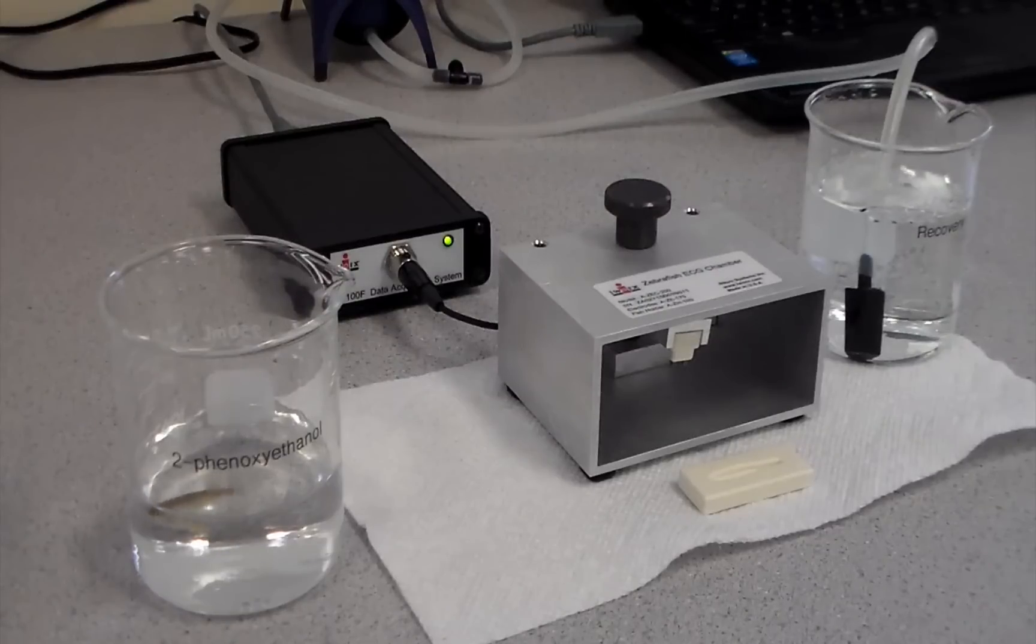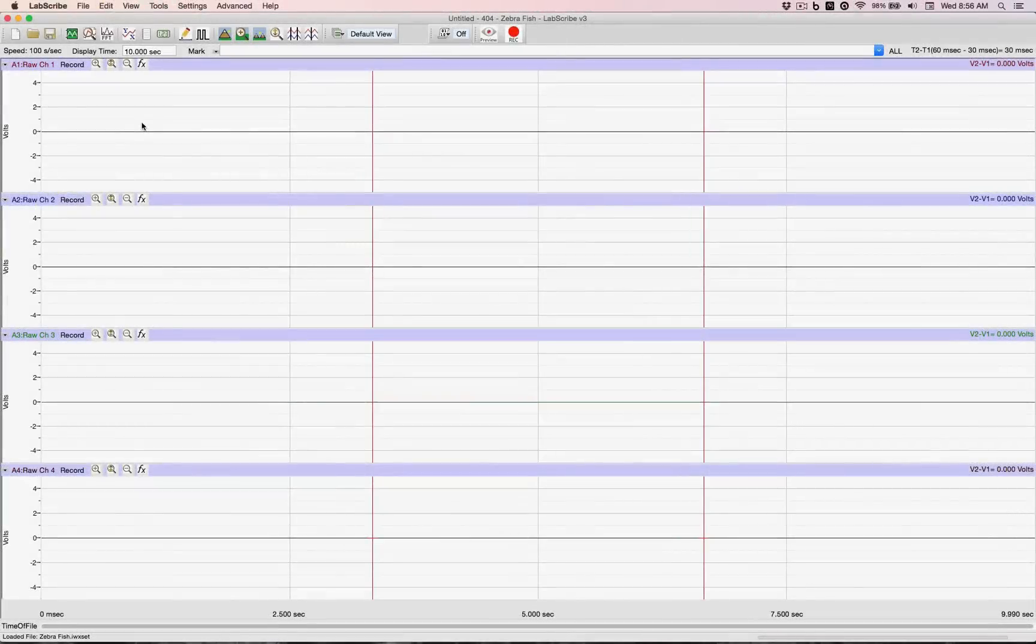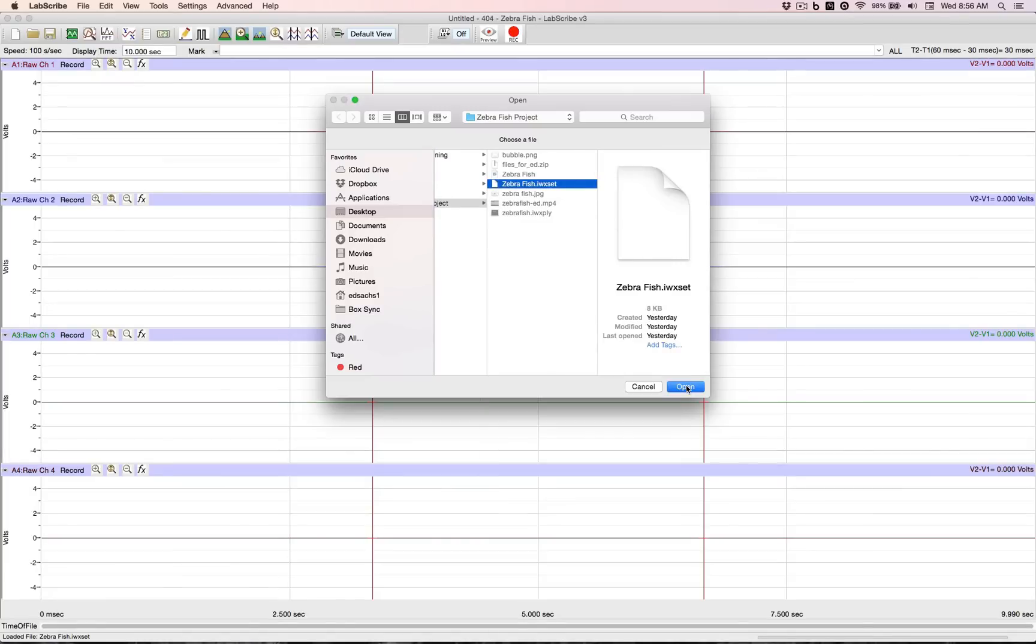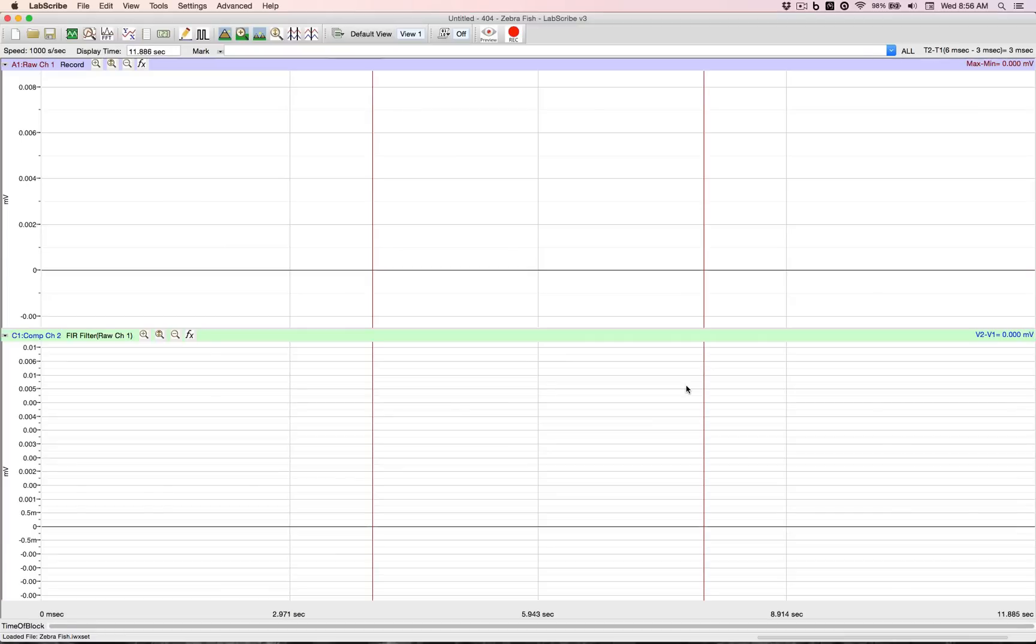While we are waiting for the fish to fall asleep, why don't we set up our software. Opening up Labscribe, we open up the settings file, which is preset for two channels, a raw channel and a filter channel.